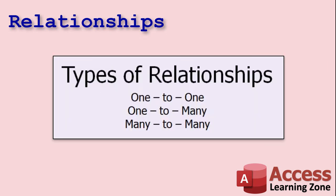There are three basic kinds of relationships: one-to-one, one-to-many, and many-to-many. By far, one-to-many is the most popular type. Let's talk about all three of them.